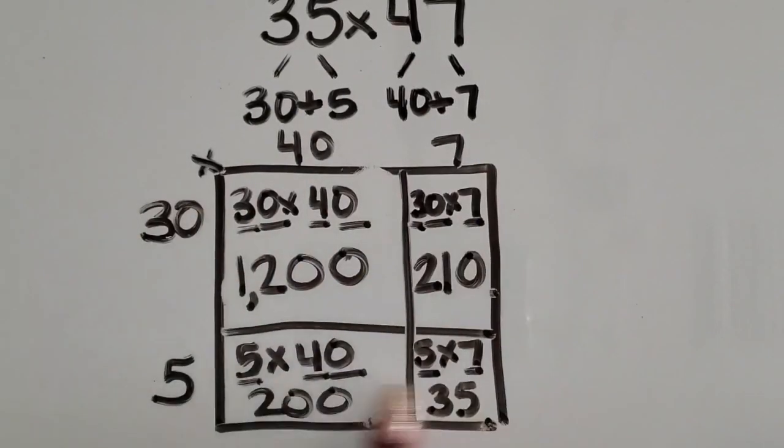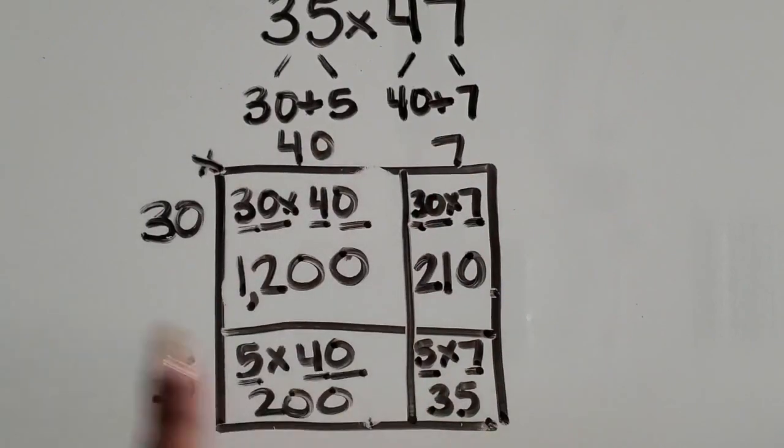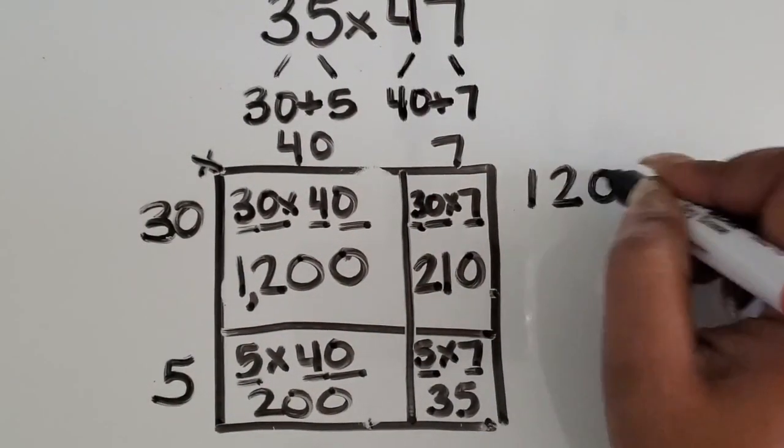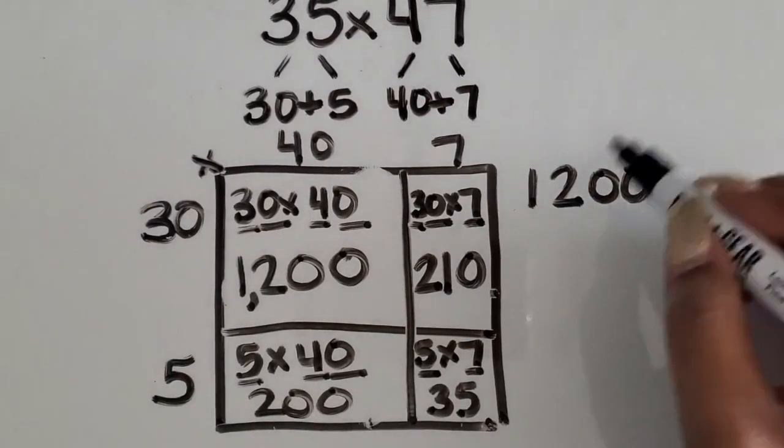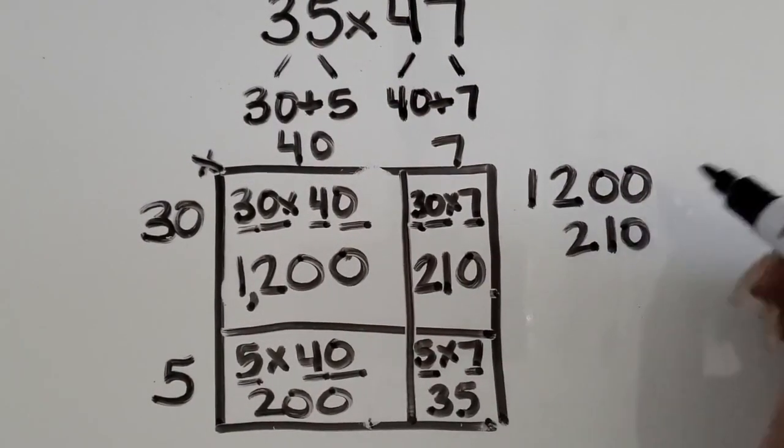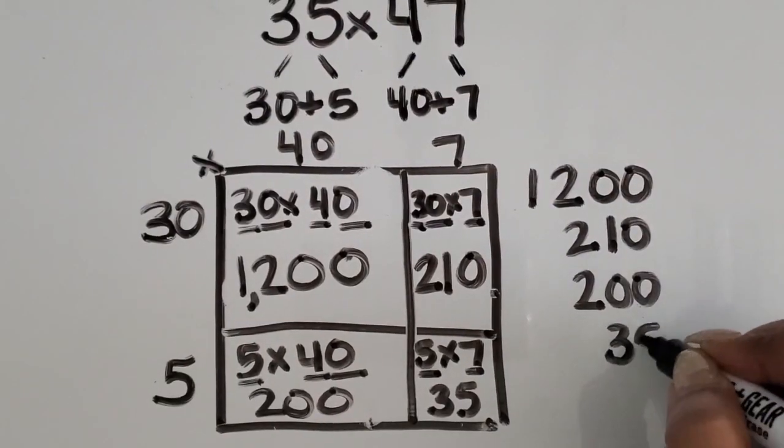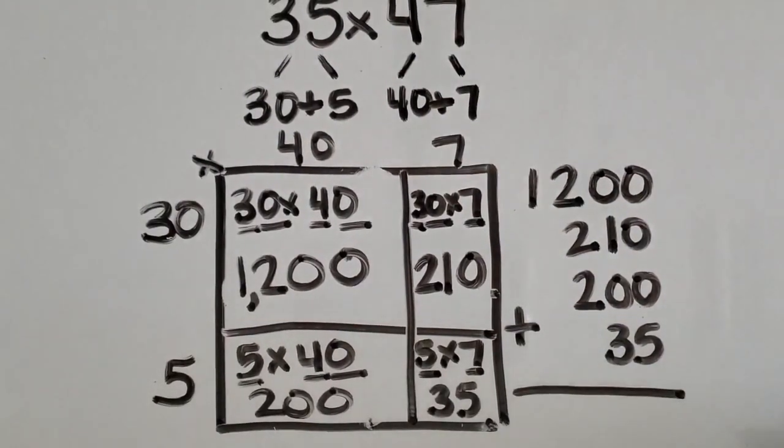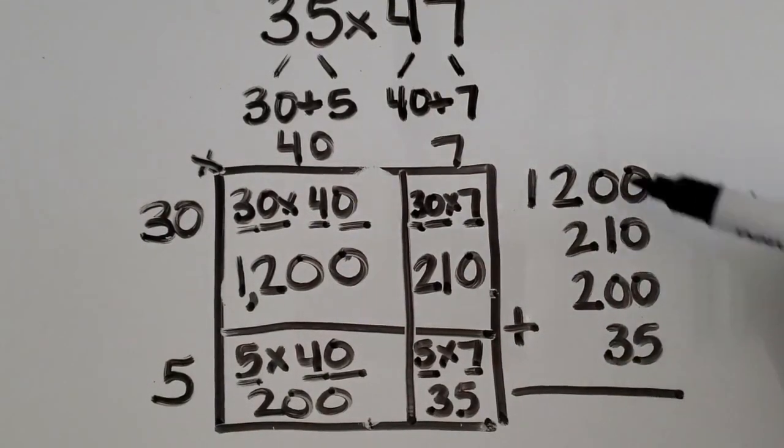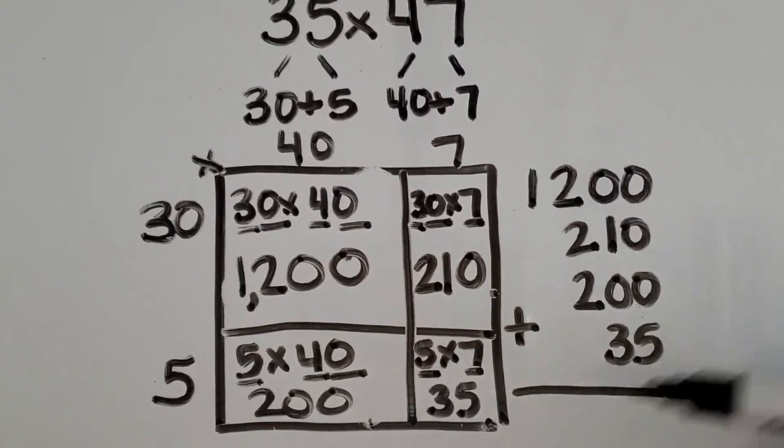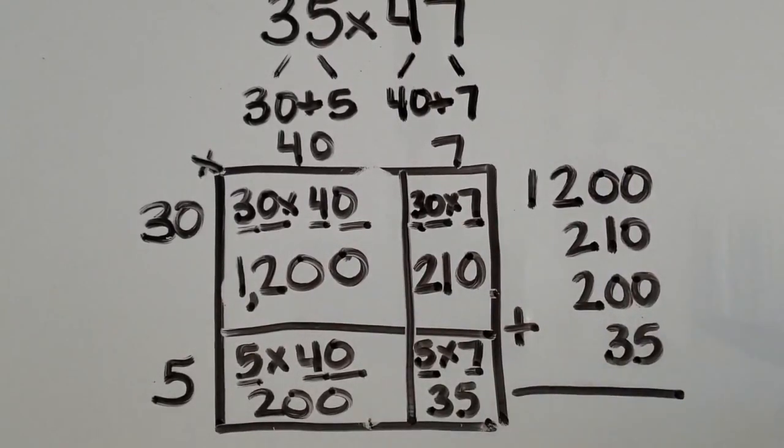Again, we want to take the partial products because we don't have the total product yet, rewrite them on the side so that we can join those partial products back together to find the total product. And then students will need to simply add them together. It's very important that they line up their numbers based on the place value so that they're not mixing ones and tens together.